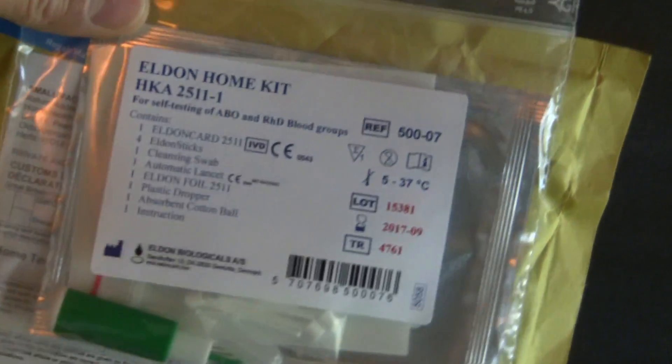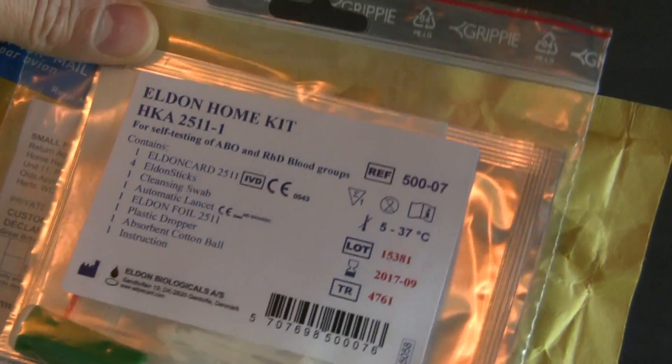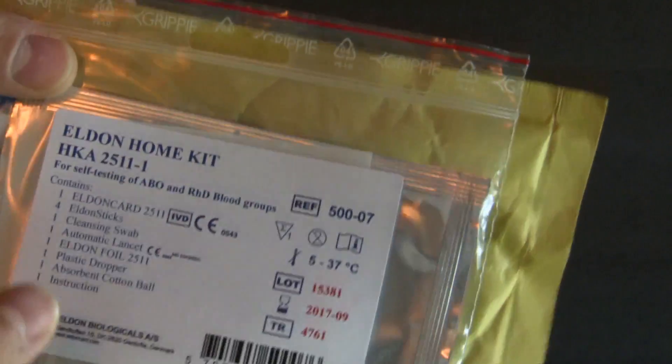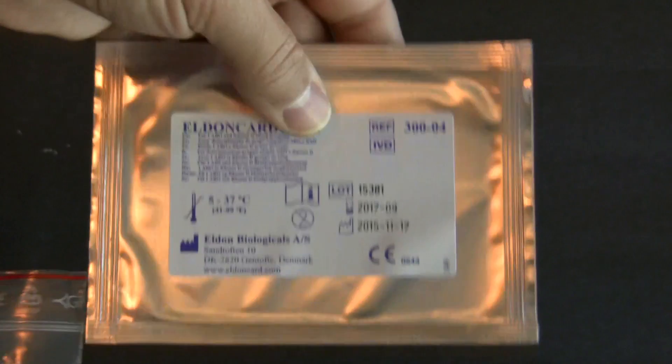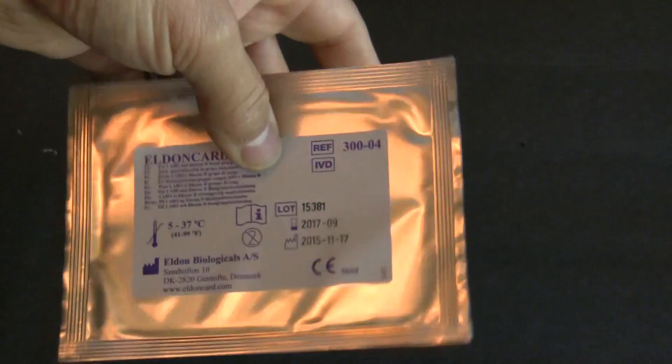I just got the Eldon home kit blood test kit to test what my blood type is. The test kit comes with the Eldon card, that's where you drop your blood.